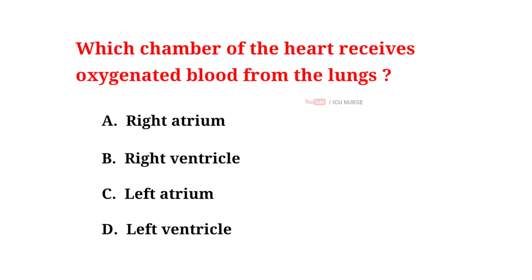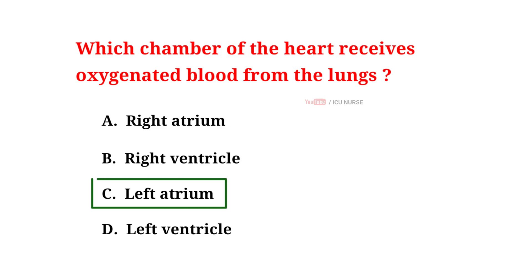Which chamber of the heart receives oxygenated blood from the lungs? A. Right atrium. B. Right ventricle. C. Left atrium. D. Left ventricle. And the correct answer is C. Left atrium.